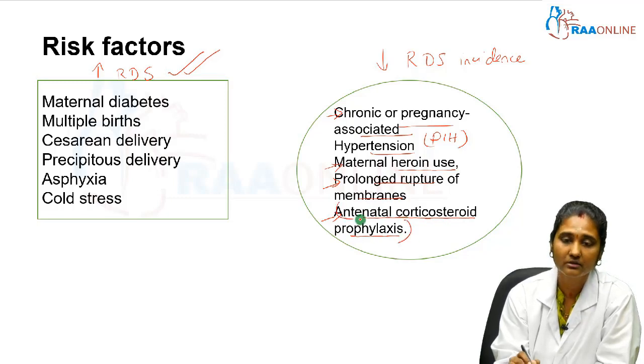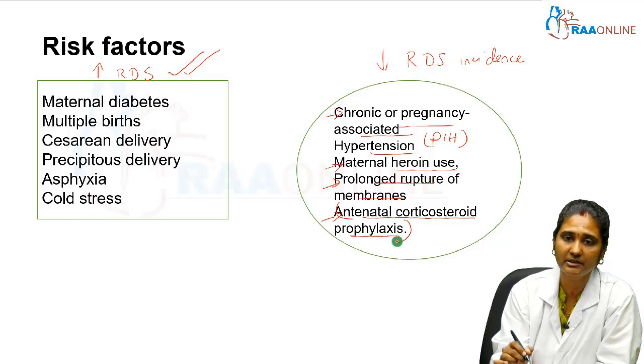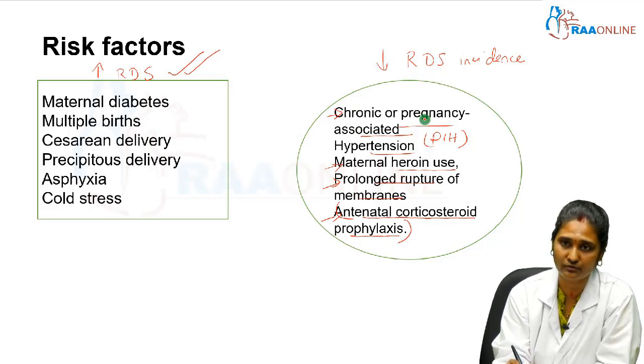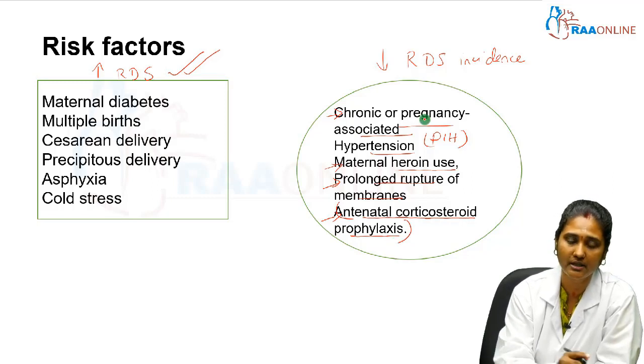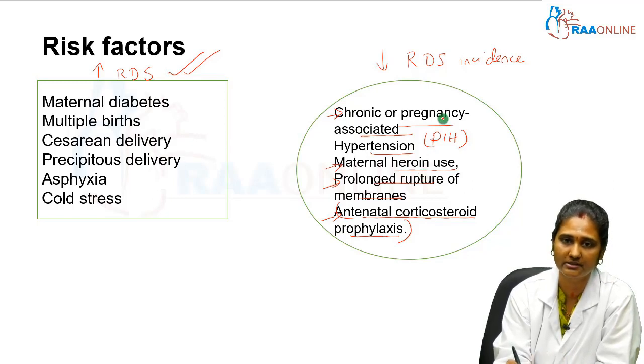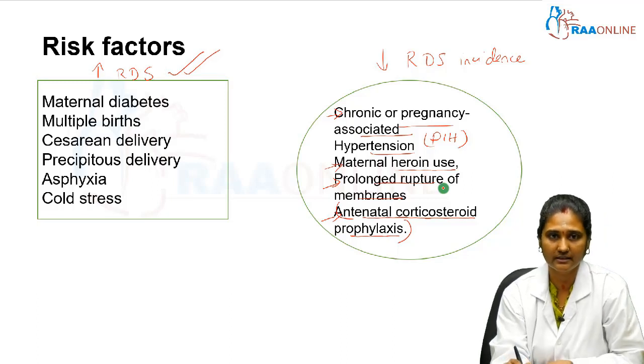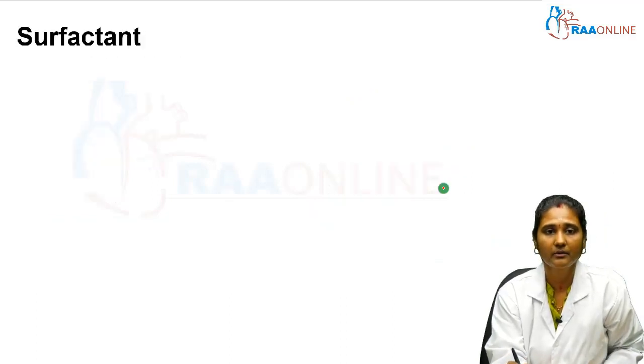Prolonged rupture of membranes and antenatal corticosteroid prophylaxis decrease RDS incidence. But these above three things we tend to forget or tend to put in the column of increasing the incidence. So you have to remember these three particularly: chronic or pregnancy-associated hypertension, maternal heroin use, and prolonged rupture of membranes. This they have given in Nelson.